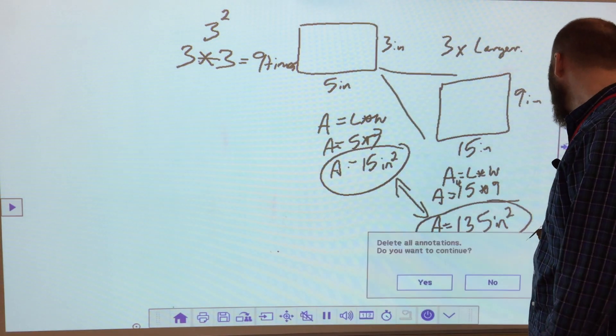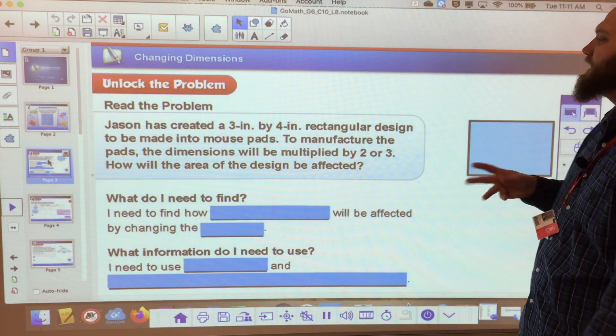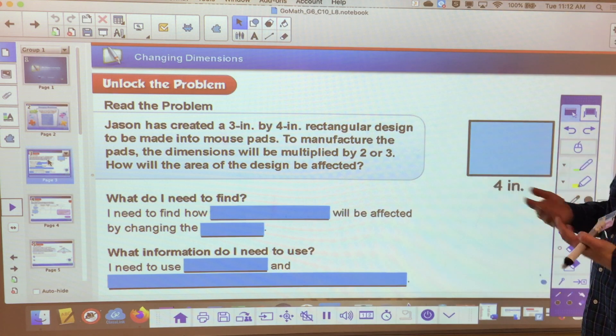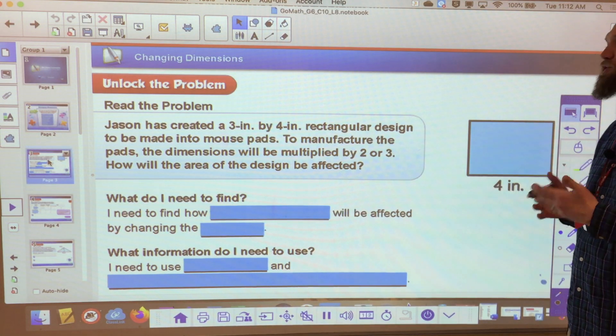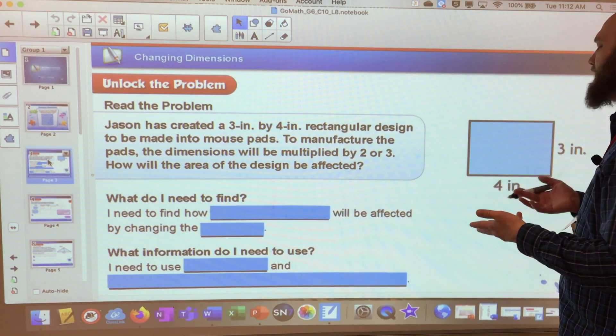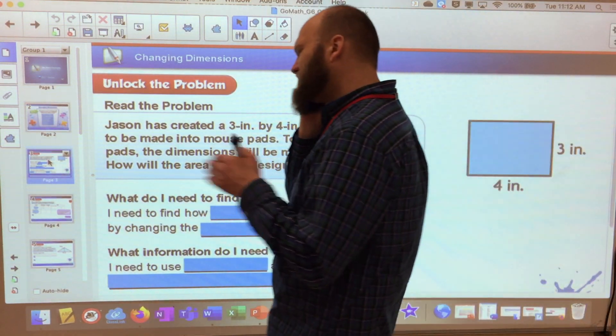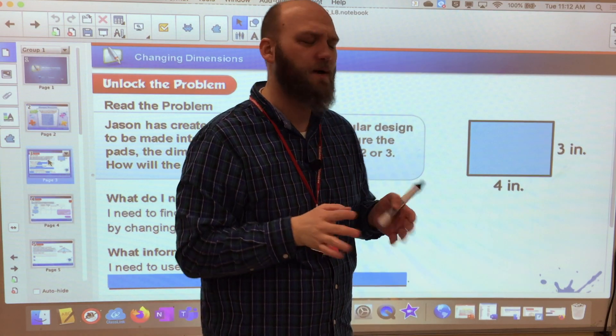So let's see what that looks like in your book. Jason has created a three inch by four inch rectangular design to be made into mouse pads. To manufacture them, the dimensions will be multiplied by two or three. How will the area of the design be affected? You might say, the area equals length times width. That's four times three, so the area is 12 inches squared.